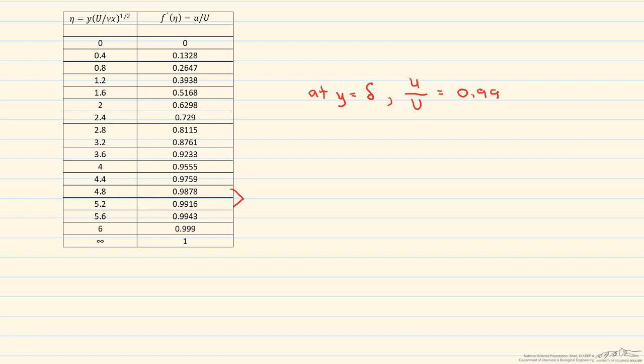We go to our table and see that 0.99 is when eta is about equal to 5. So eta equals delta times the square root of U over the kinematic viscosity times x.